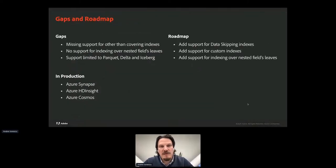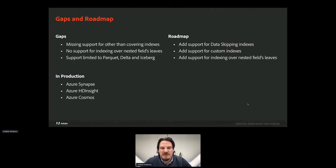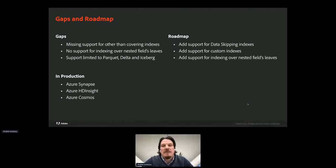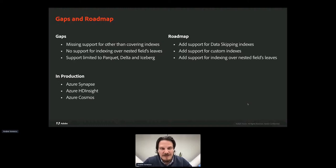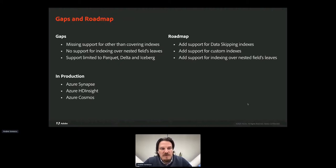Hyperspace is a new technology and has some gaps and a roadmap to close them. Currently it lacks support for nested fields — indexing on a property of a struct type is not possible right now, but work is being done. The release used in the demo supported only covering indexes, but currently Hyperspace has been updated to support multiple index types, including a data skipping index. Hyperspace works with Parquet, open-source Delta, and Iceberg, but lacks support for other file types and table formats like Avro, ORC, and Hudi. In production, Microsoft uses Hyperspace in Azure Synapse, Azure HD Insight, and Azure Cosmos.